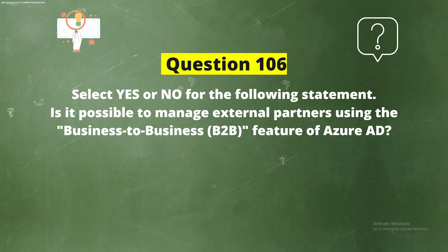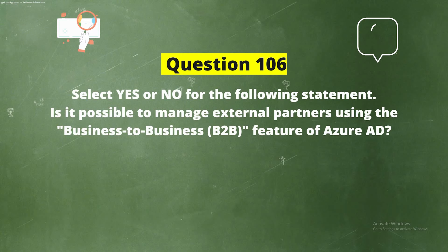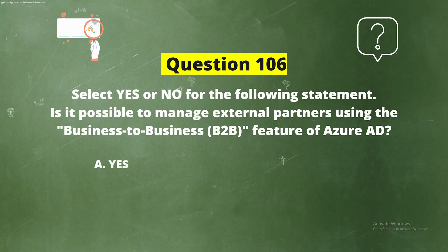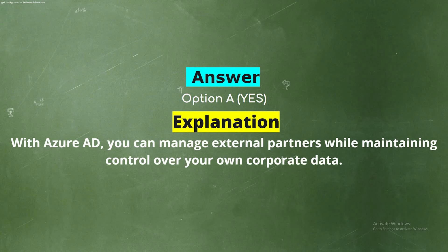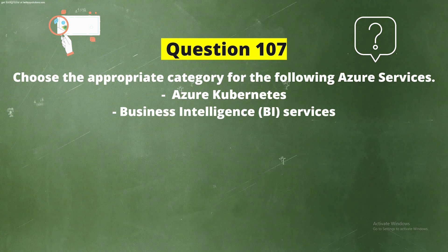Question 106: Select yes or no for the following statement. Is it possible to manage external partners using the business-to-business (B2B) feature of Azure AD? The correct answer is Option A: Yes. With Azure AD, you can manage external partners while maintaining control over your own corporate data.